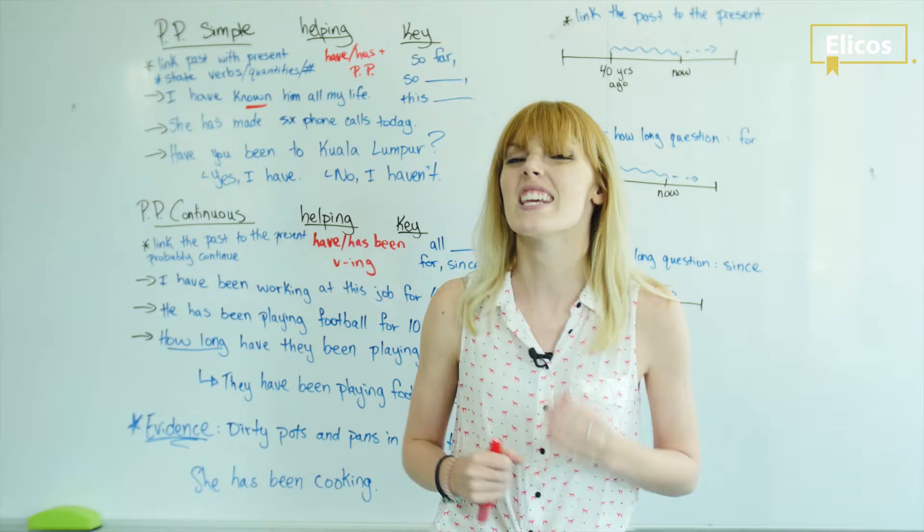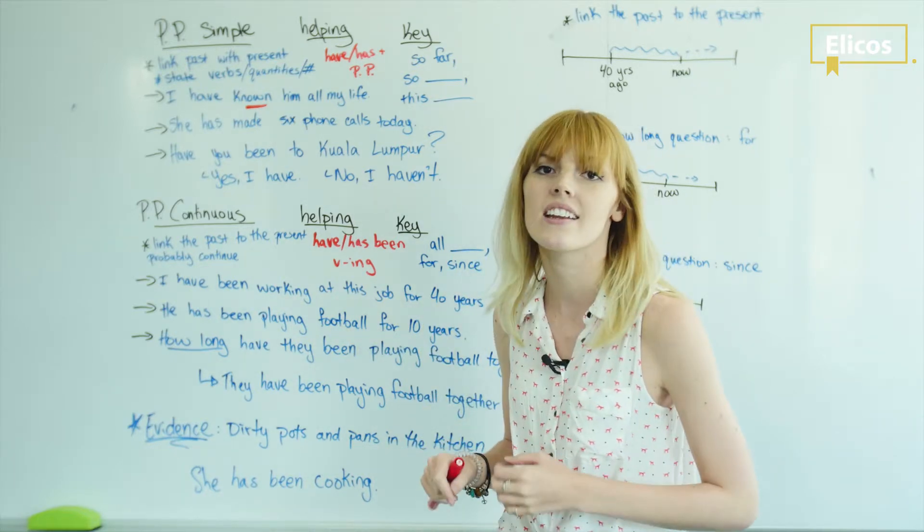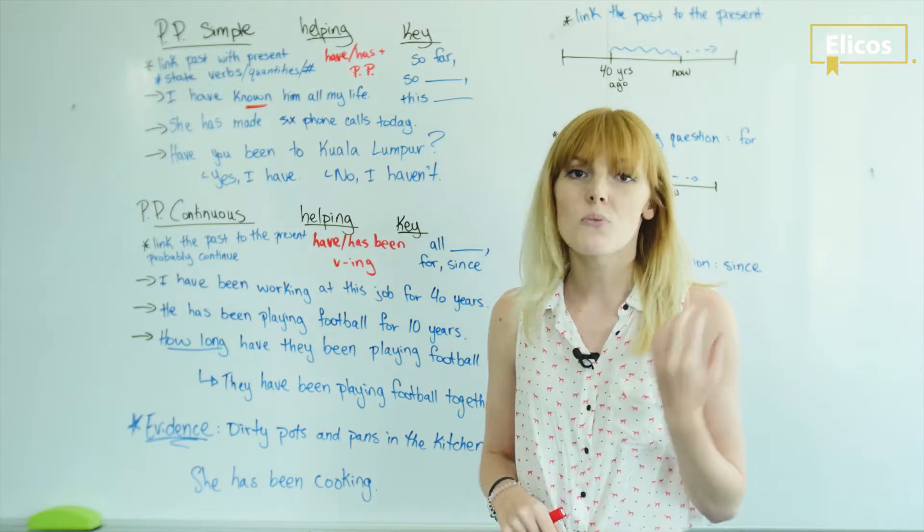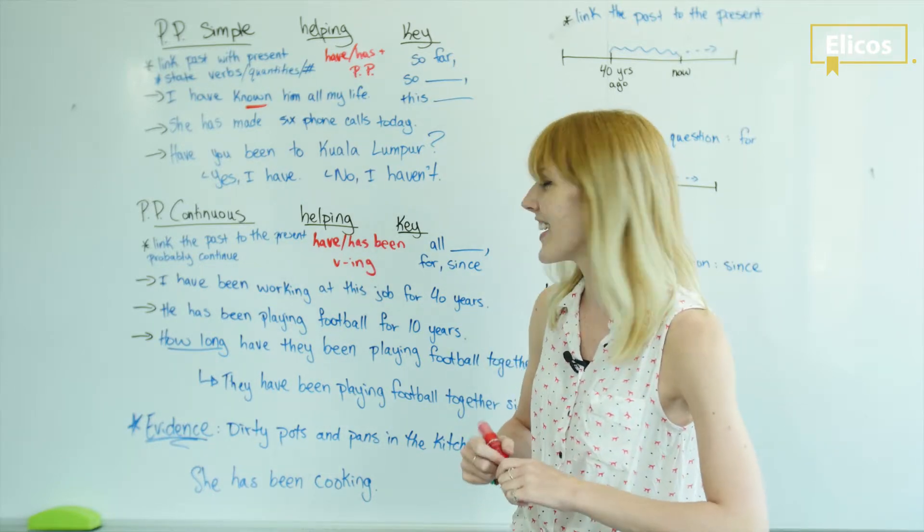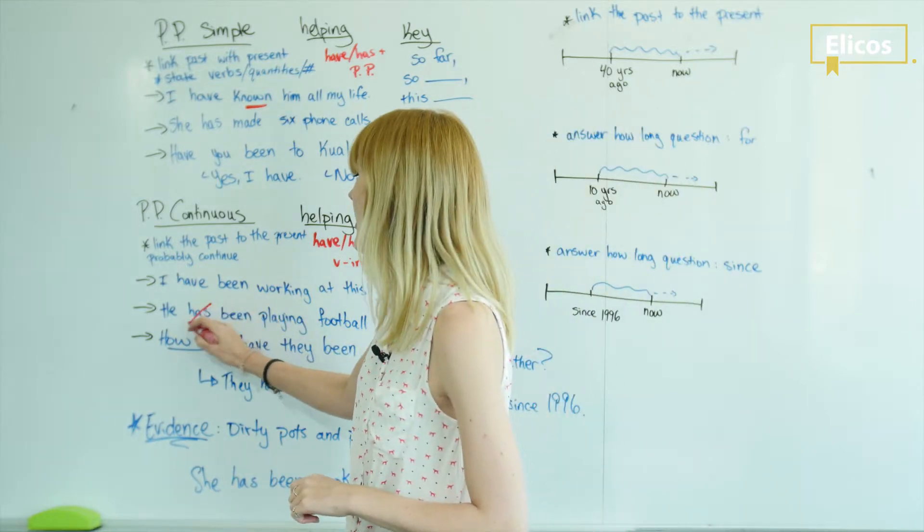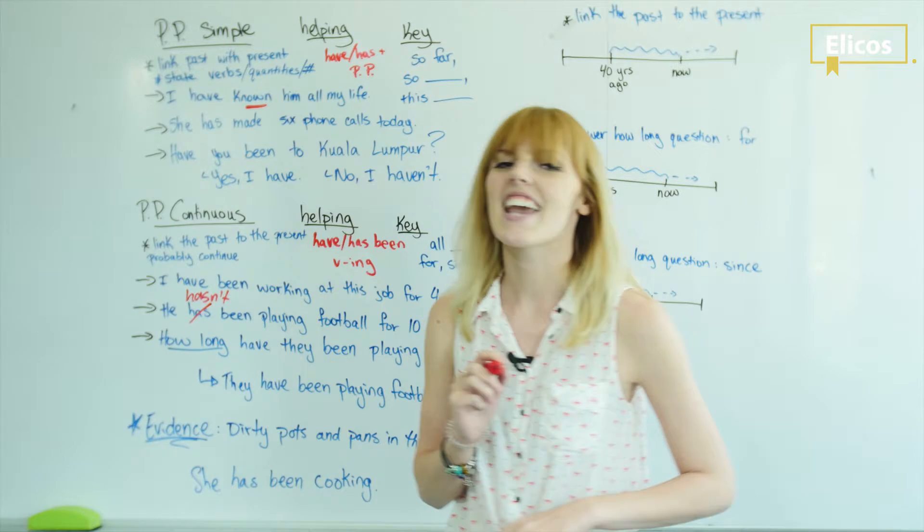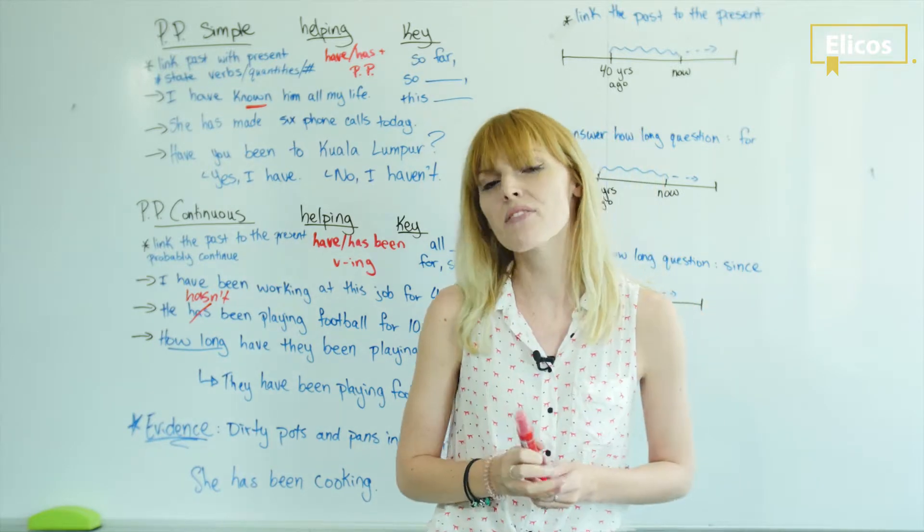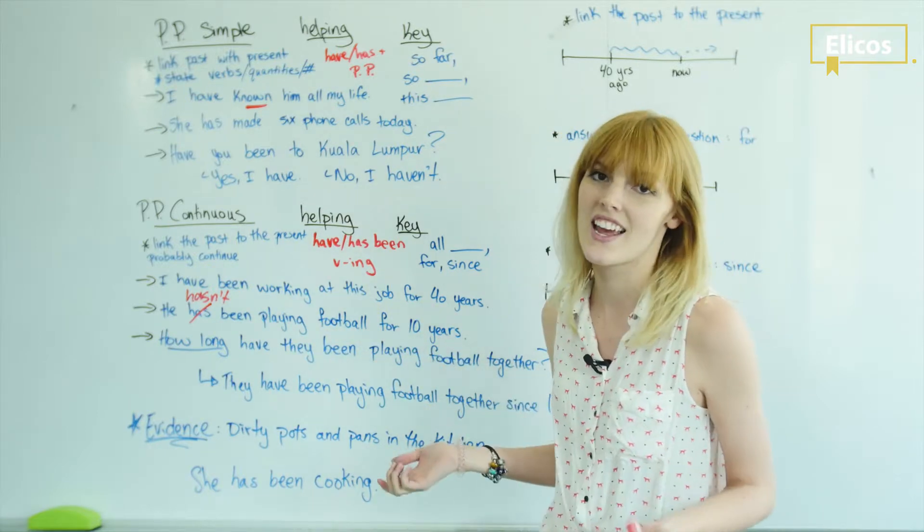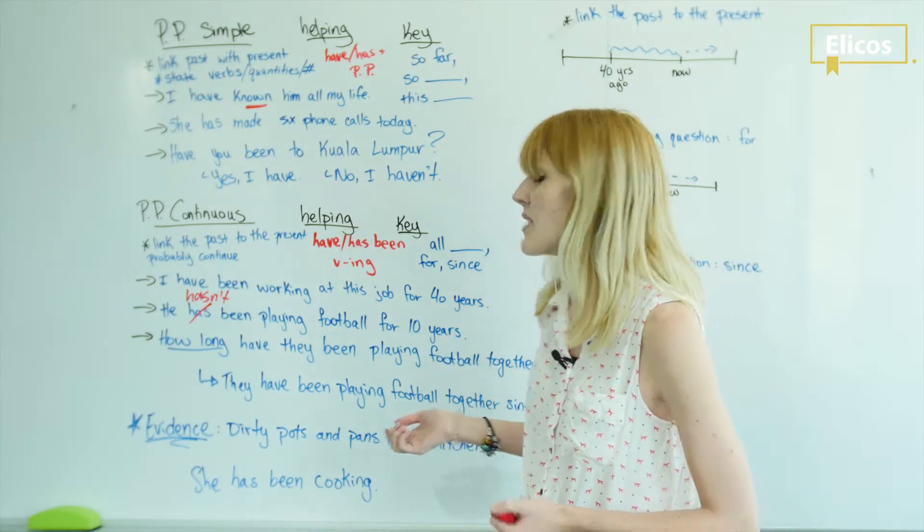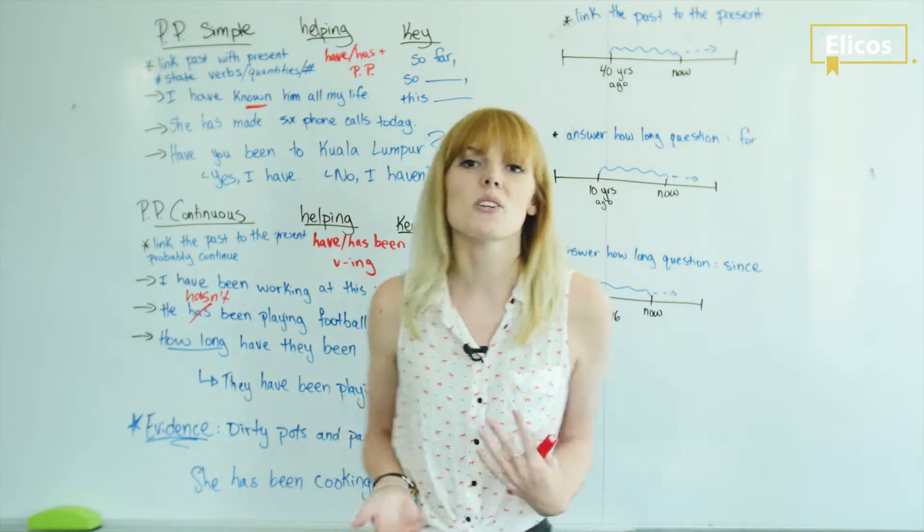He has been playing football for 10 years. Now if you want to make it negative, can you guess what we do? He hasn't. The negative goes on the have or the has. He hasn't been playing football for 10 years. Maybe only three years.